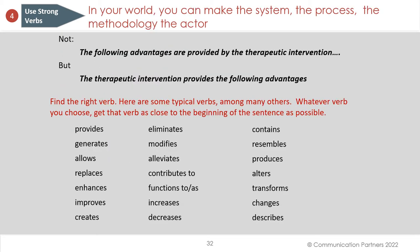In your world of scientific research, you can make the system, the process, or the methodology the actor and get to active voice. For example, instead of 'the following advantages are provided by the therapeutic intervention,' make the therapeutic intervention the subject: 'The therapeutic intervention provides the following advantages.' Then find the right verb — get the verb close to the beginning of the sentence, but pick a good verb. 'The experiment revealed.' 'The analysis showed.' All these verbs are available given the context, allowing you to make the system or methodology the actor and achieve active voice.